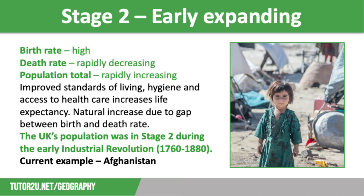Stage 2 is early expanding. The birth rate is high and the death rate is rapidly declining, which means the population is rapidly increasing, and at some point during this stage the country will experience a population explosion. The reason this is happening is due to improved standards of living, hygiene and access to healthcare, which all increase life expectancy and result in natural increase due to the gap between birth and death rates.